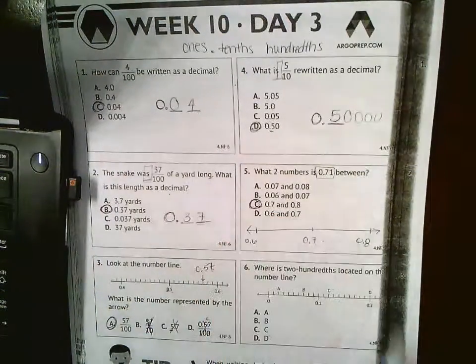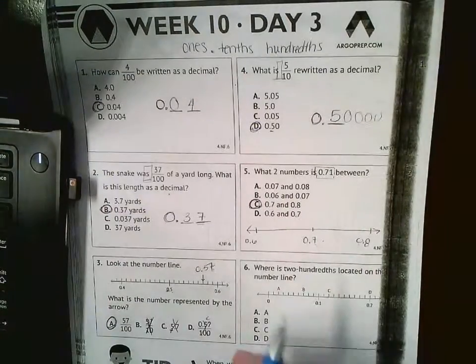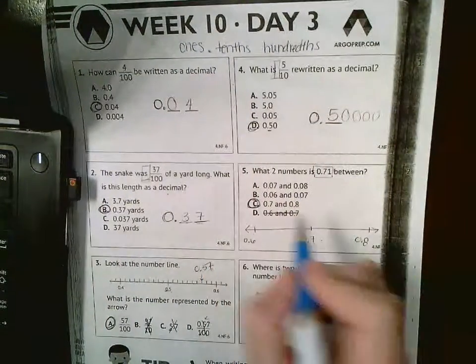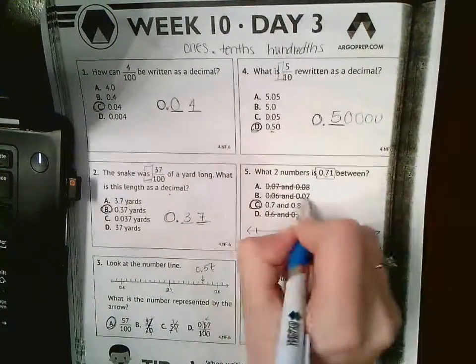So it would be between 7 tenths and 8 tenths. The 6 and the 7 is too small, and these two are hundredths. Well, I already have a 7 in my tenths place, so it's bigger than those.